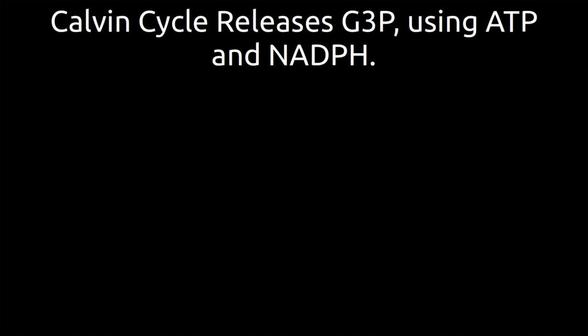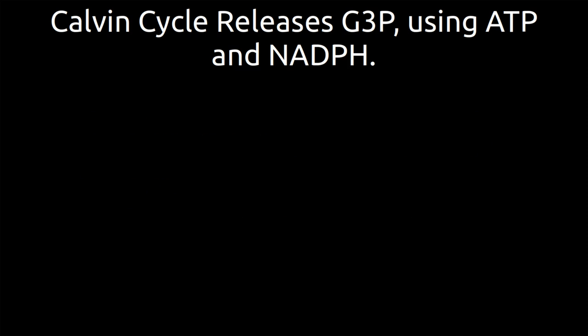In the entire Calvin cycle, what you're getting released is not 3-PGA, or 3-phosphoglycerate. What you actually get is glyceraldehyde 3-phosphate. It's going to use an ATP plus an NADPH. And then that glyceraldehyde 3-phosphate, we're going to move it into the cytoplasm where it can be used for other things.